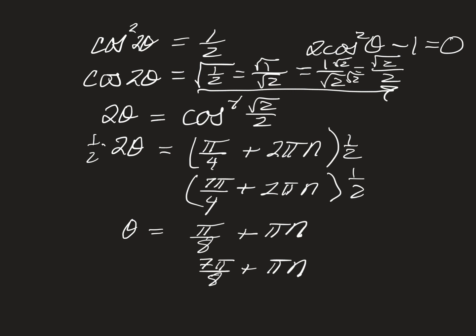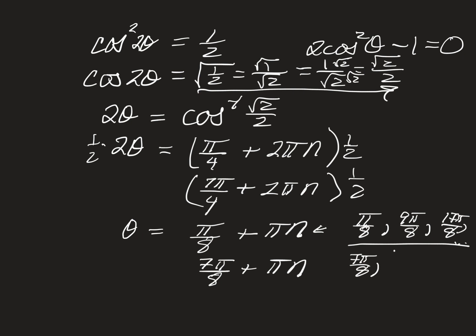So what do these answers look like? Sometimes they'll ask you to list the first six answers. If I add π to π/8: π/8 + 8π/8 = 9π/8, then add 8π/8 again gives 17π/8, and so on. For the other family: 7π/8, then add 8π/8 gives 15π/8, then 23π/8, and that list goes on forever. These are examples of what those solutions look like.